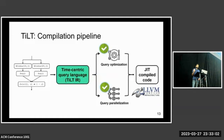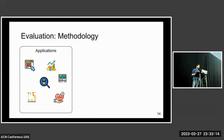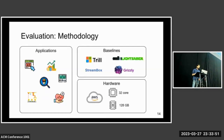For more details about the compiler backend and the code generation strategy, I encourage you to take a look at our paper. Next, let me talk about the experimental methodology and evaluation. We compare the performance of TILT on a wide range of streaming analytics applications. We prepared a comprehensive benchmark suite consisting of applications from click stream analytics, trading algorithms, fraud detection algorithms, signal processing, and healthcare analytics. We compare TILT against four strong baselines. Both Trill and StreamBox are interpretation-based query execution stream processing engines, and both Lightsaber and Grizzly are compiler-based stream processing engines. We run our experiments on a single machine with 32 cores and 128 gigabytes of memory.